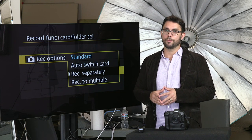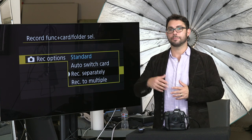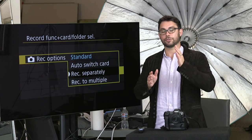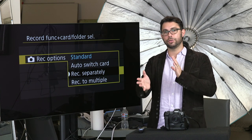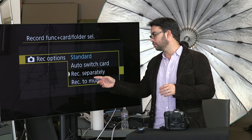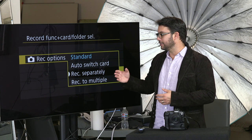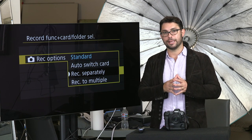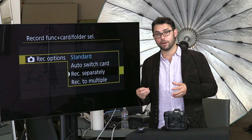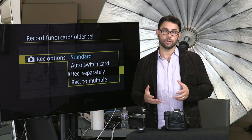You could do medium JPEG on the CFexpress and small JPEG on the SD card. You can do whatever. As long as you want two different formats recording on each card, then you choose record separately. If you want the same exact file, the same resolution and format recorded as a pure backup — an exact copy — then you go to record to multiple.